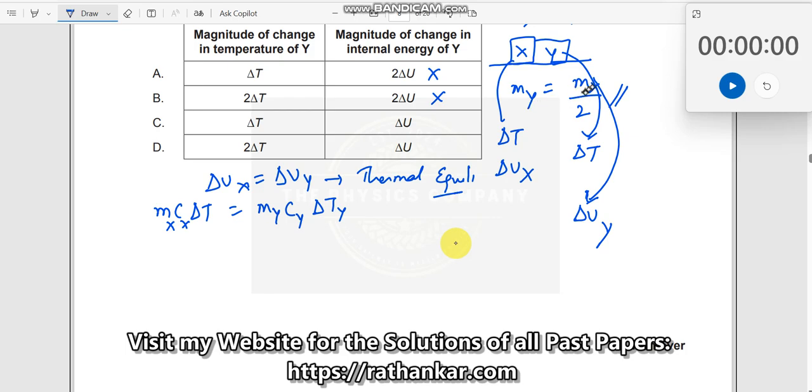We also know mY equals mX by 2. In other words, I can write mX is equal to 2 times mY. I will put it like this. I do not want fractions, so I will put 2 times mY.